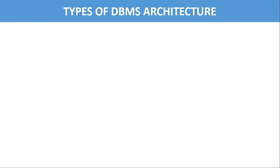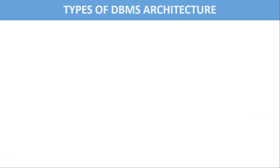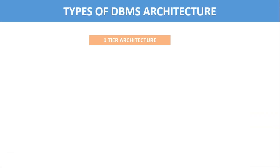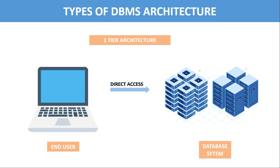Types of DBMS architecture. There are three different types: single or one-tier architecture, two-tier architecture, and three-tier architecture. Single-tier architecture is the simplest. In this architecture, the database is directly available to the user who can directly access and use it. For example, if you want to get all the employee records from the database, you can directly communicate with the database from your computer itself. This is why this architecture is also known as a local database system.